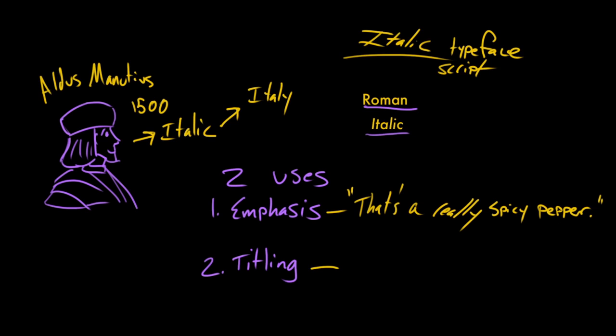Okay, and use case number two for titling. And you know what, to make it easier on ourselves, let's pull up a text box. Yeah, it's kind of hard to write italics with your hand. Yeah, which is actually going to lead us into another part of this video. You'll see. But right now, okay, I've got my italic type selected.